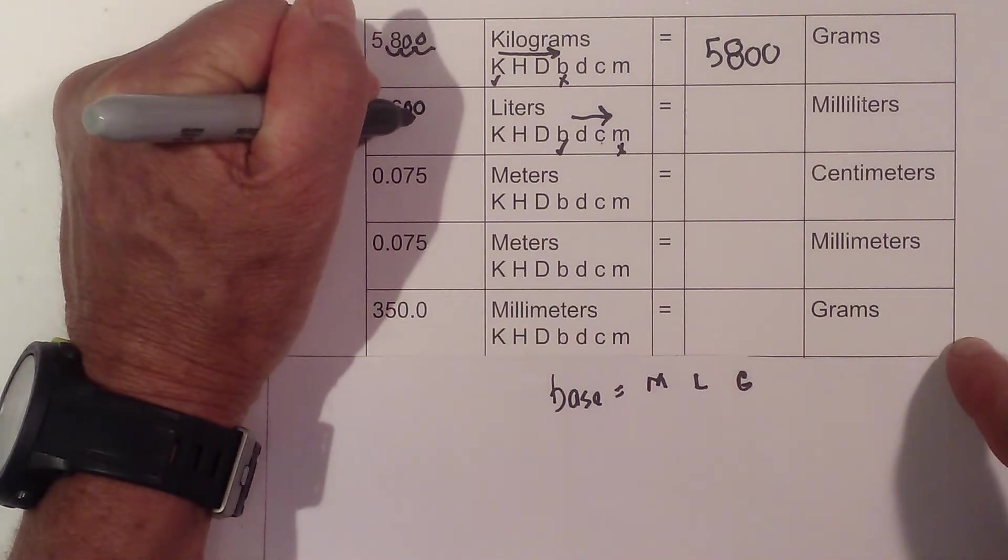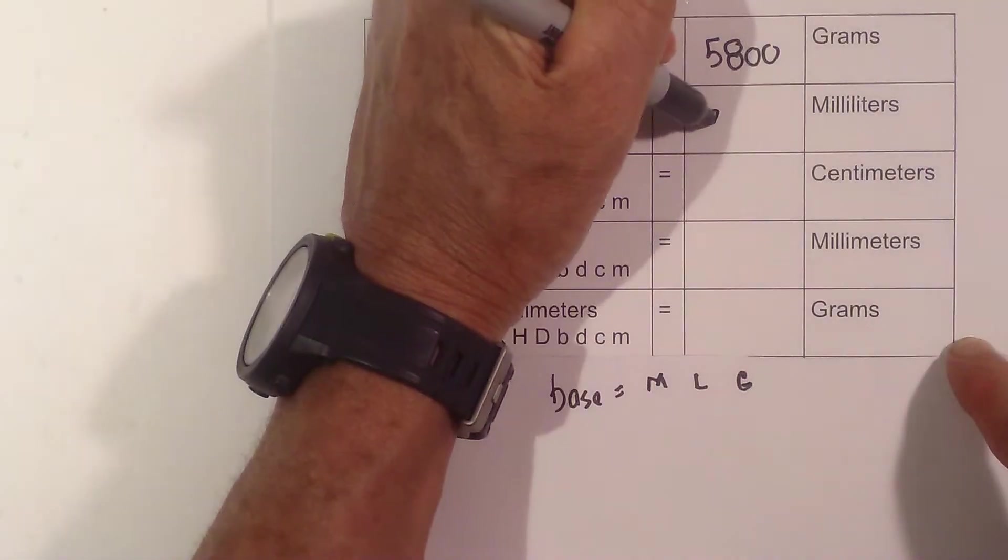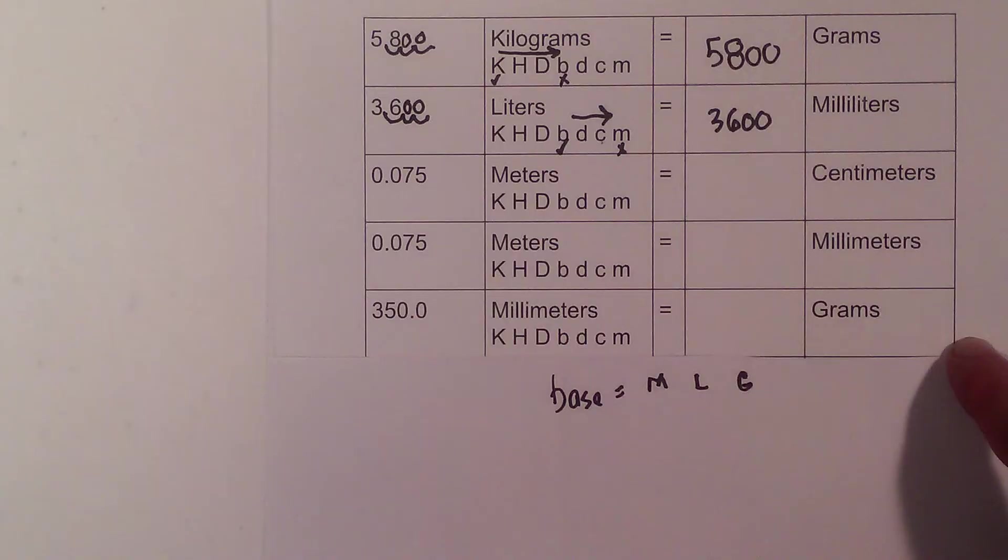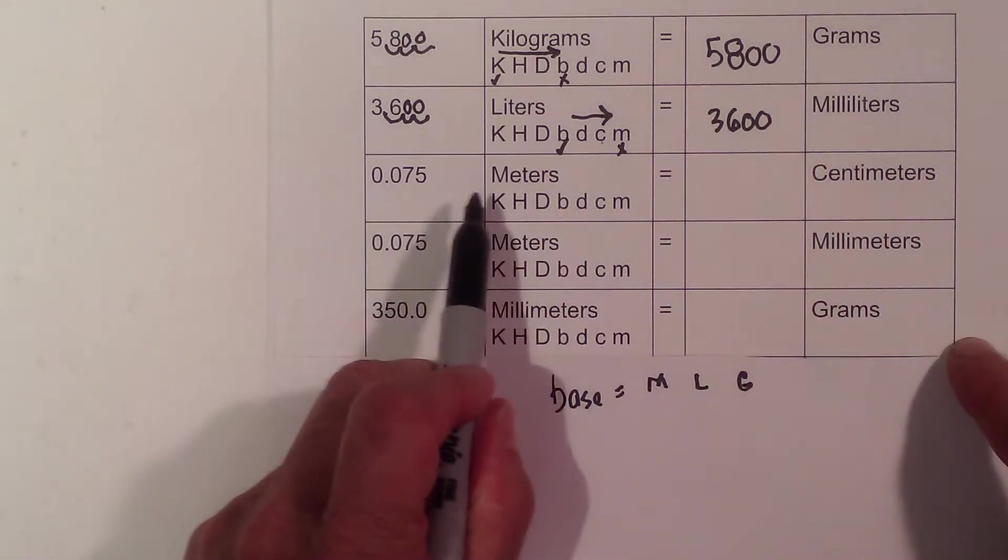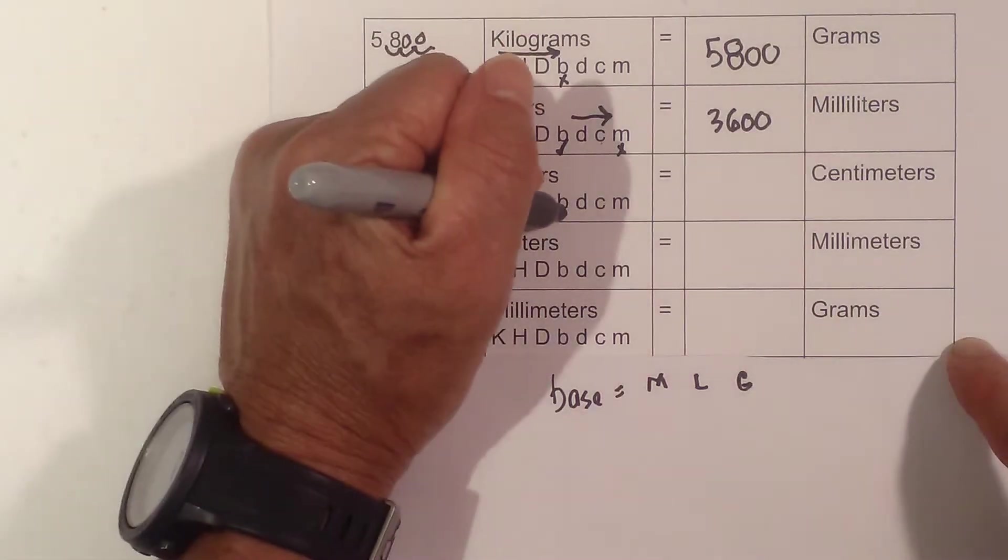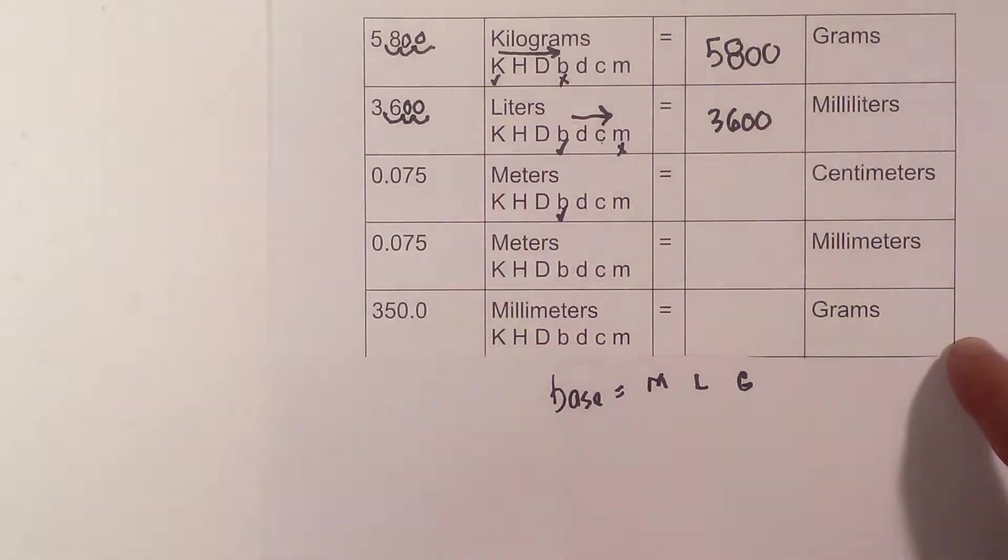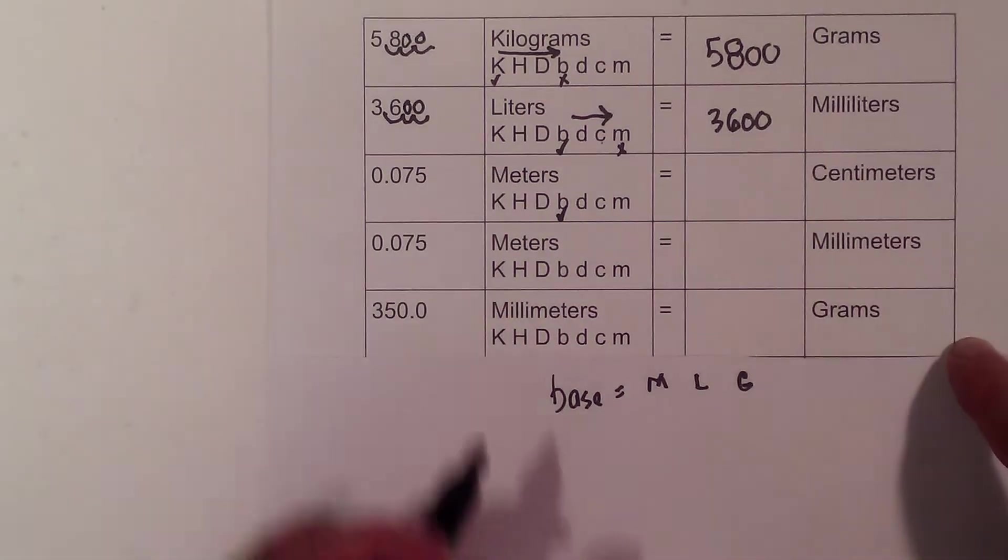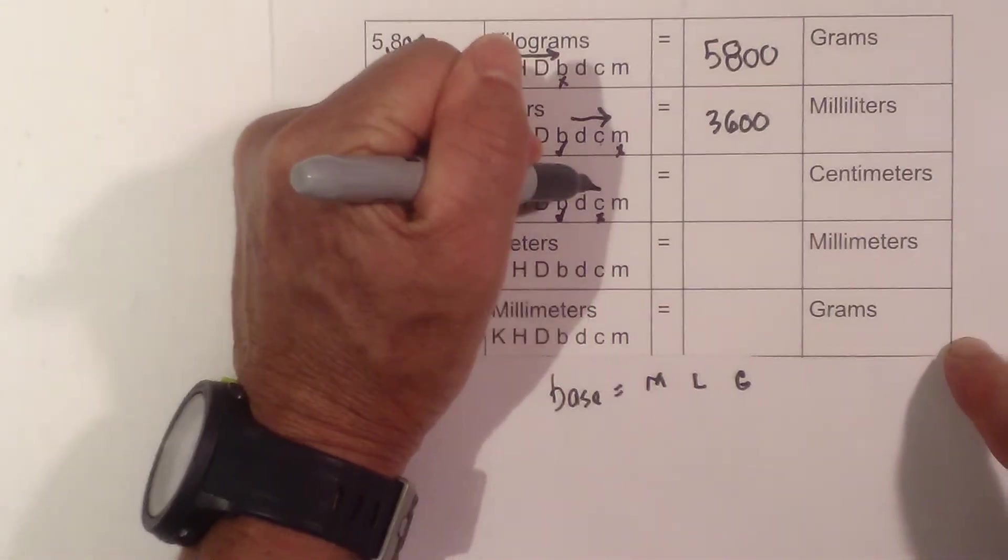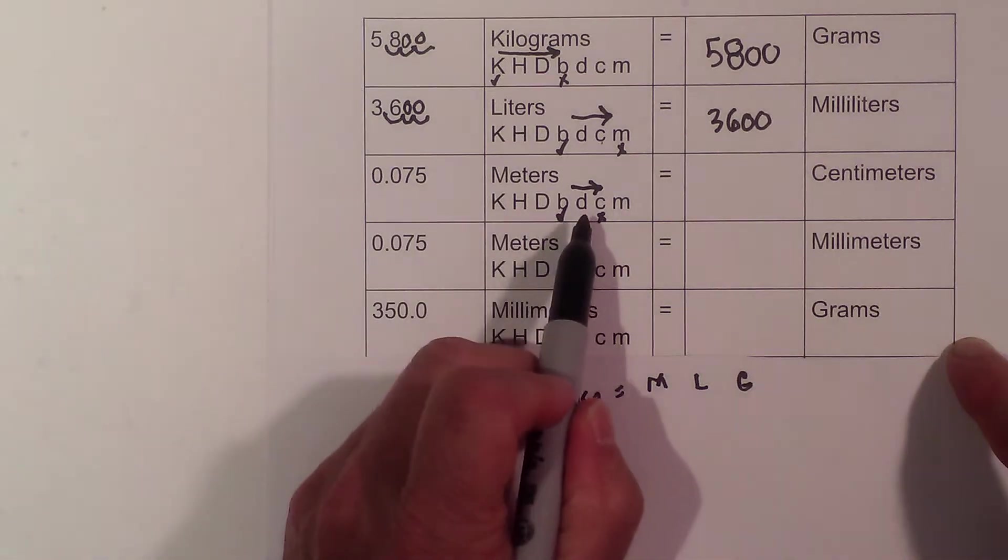That becomes 3,600 milliliters. Now we have 0.075 meters equals how many centimeters? Meters is a base, so I put a check where I'm starting. I'm going to centimeters, which is the C. I'm going from the check to the X, draw the arrow, and I count one, two.